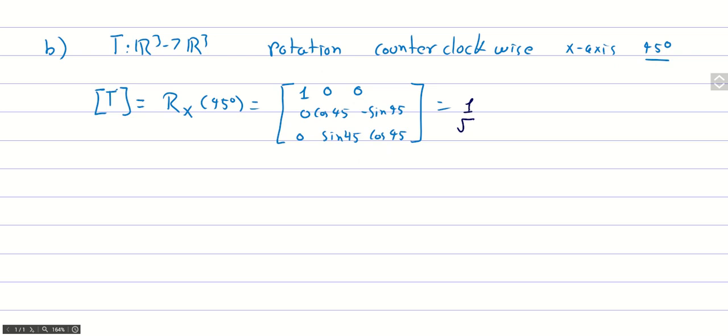1 over the square root of 2, times the matrix square root of 2, 0, 0, 0, 1, minus 1, 0, 1, and 1.